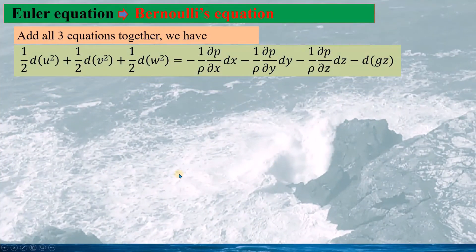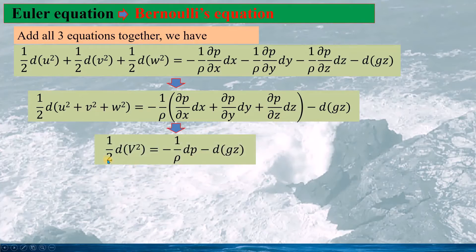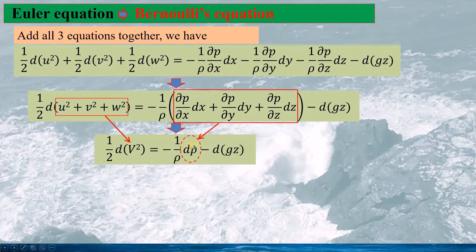Now we add all three equations together. Combining all the velocity components on the left-hand side, we put them together and factor out one-over-rho from the pressure terms. We can see that the bracket contains the differential of pressure. Capital V squared is the sum of the squares of the three velocity components, and this gives the differential expression for the pressure.